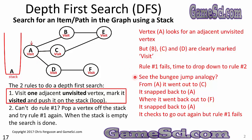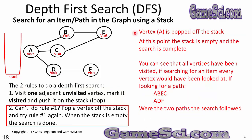This is the bungee jump analogy: from A it went out to C, snapped back to A, went out to F, snapped back to A, then rule 1 fails entirely. Pop A off the stack — the stack is now empty and the search is complete. All vertices have been visited. The two paths followed were A-B-E-C and A-D-F.